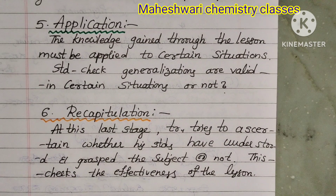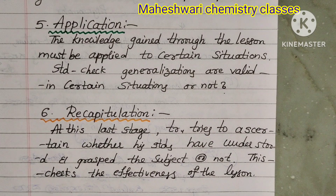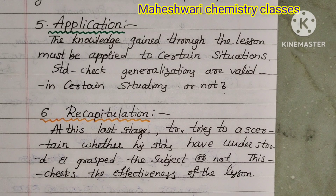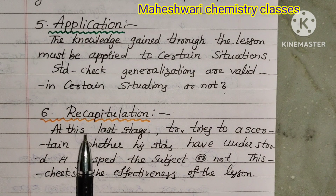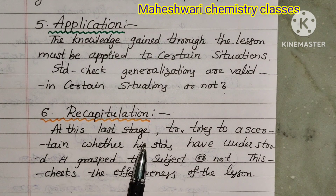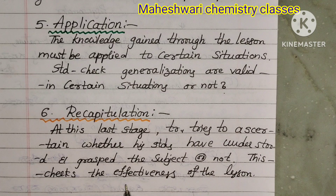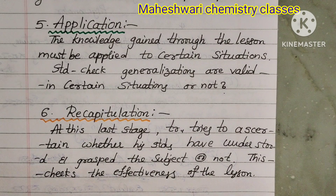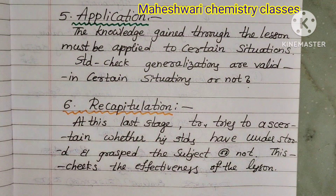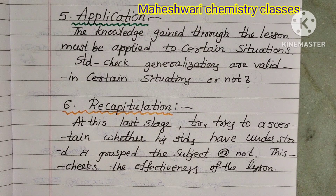The sixth step is Recapitulation. At this last stage, the teacher tries to ascertain whether students have understood and grasped the subject or not. This checks the effectiveness of the lesson. These are the six steps of the Herbartian lesson plan.